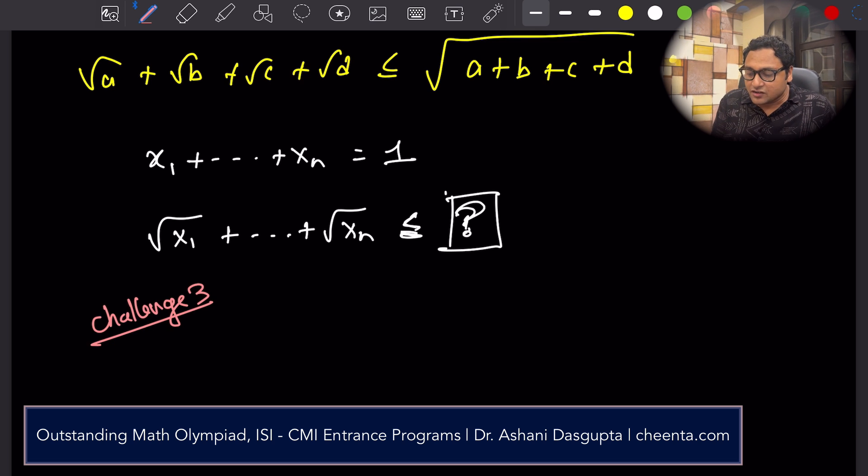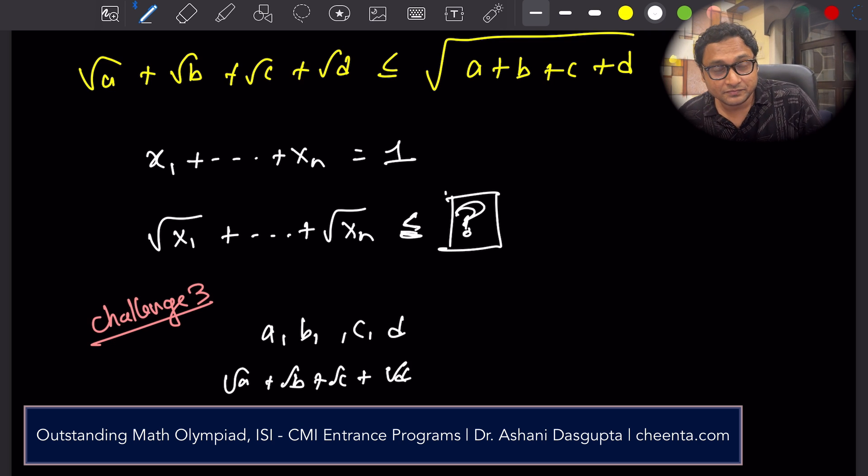for what special values of A, B, C, D, the maximum value of square root of A plus square root of B plus square root of C plus square root of D can be achieved? For what values of A, B, C, D can the maximum value be achieved? Can you find that out and tell me in the comment section. The third challenge, the students who have done this, we will do all the three challenges. We might invite them to present their work in our channel.